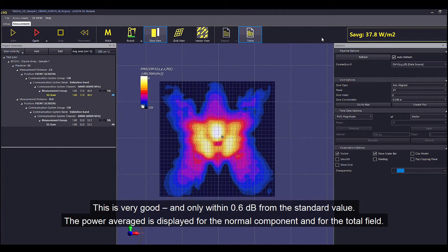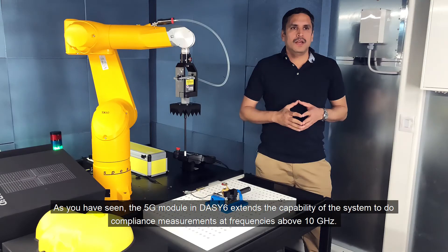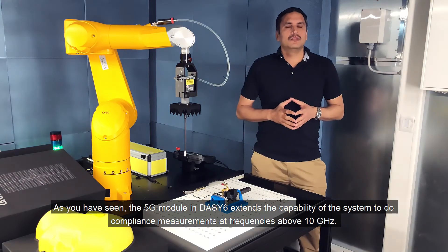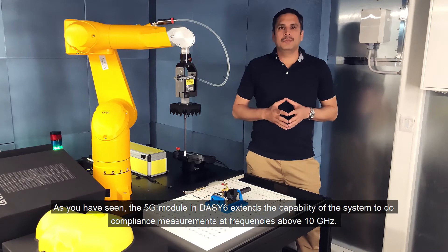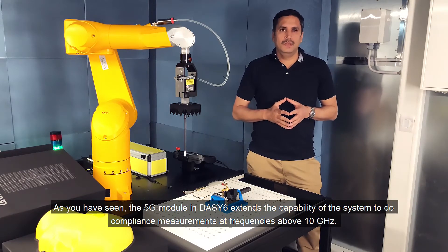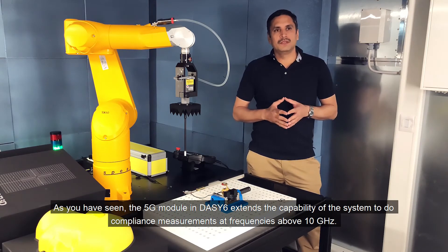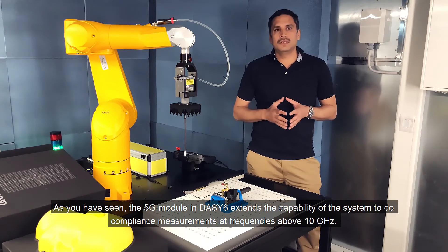The power average is displayed for the normal component and for the total field. As you have seen, the 5G module in DAISY 6 extends the capability of the system to do compliance measurements at frequencies above 10 gigahertz.